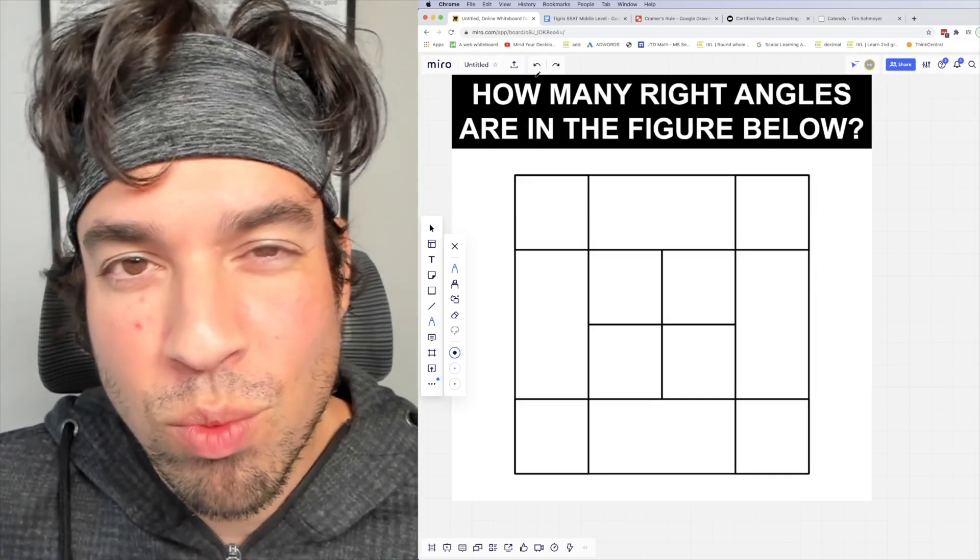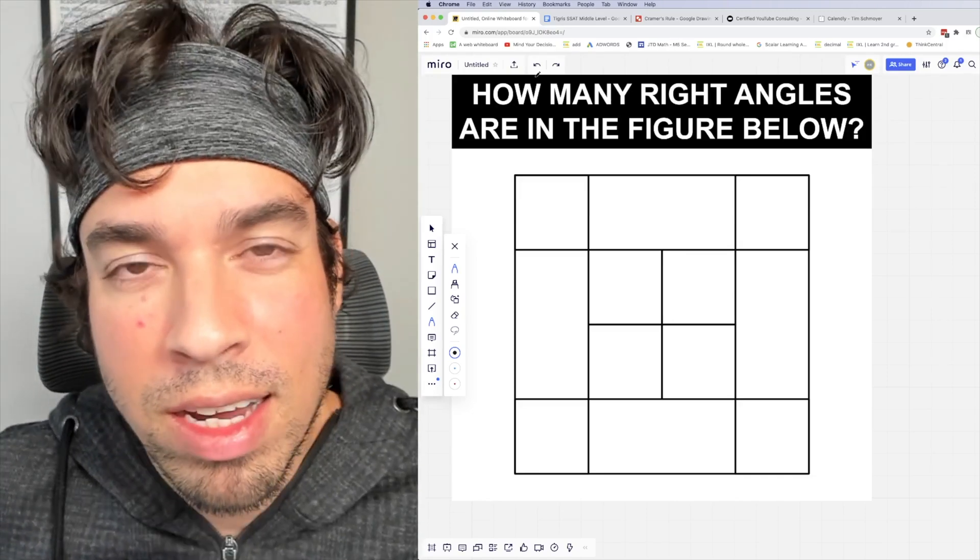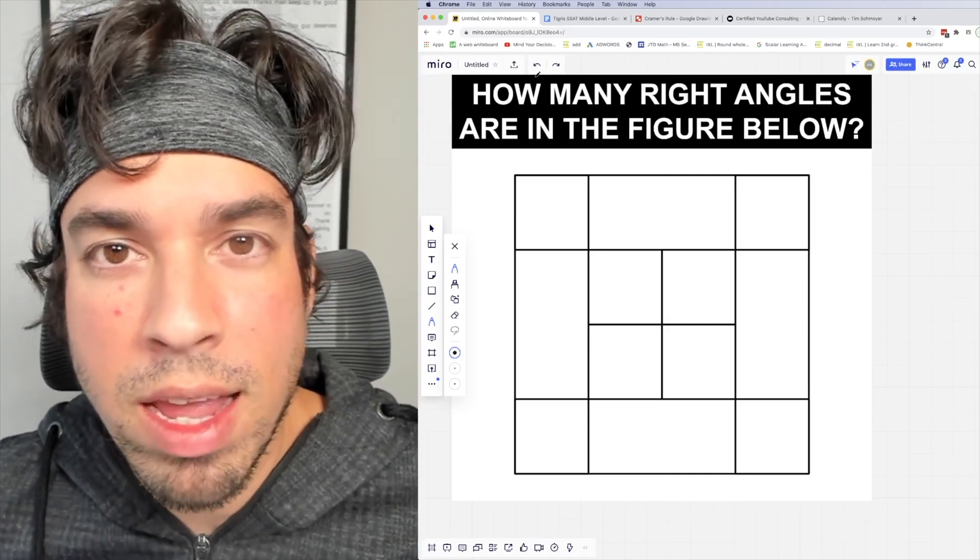Now, just a quick recap. A right angle is an angle of 90 degrees, right? And it's what you see in corners at the edge of TVs, different rectangular objects. Those are all right angles.